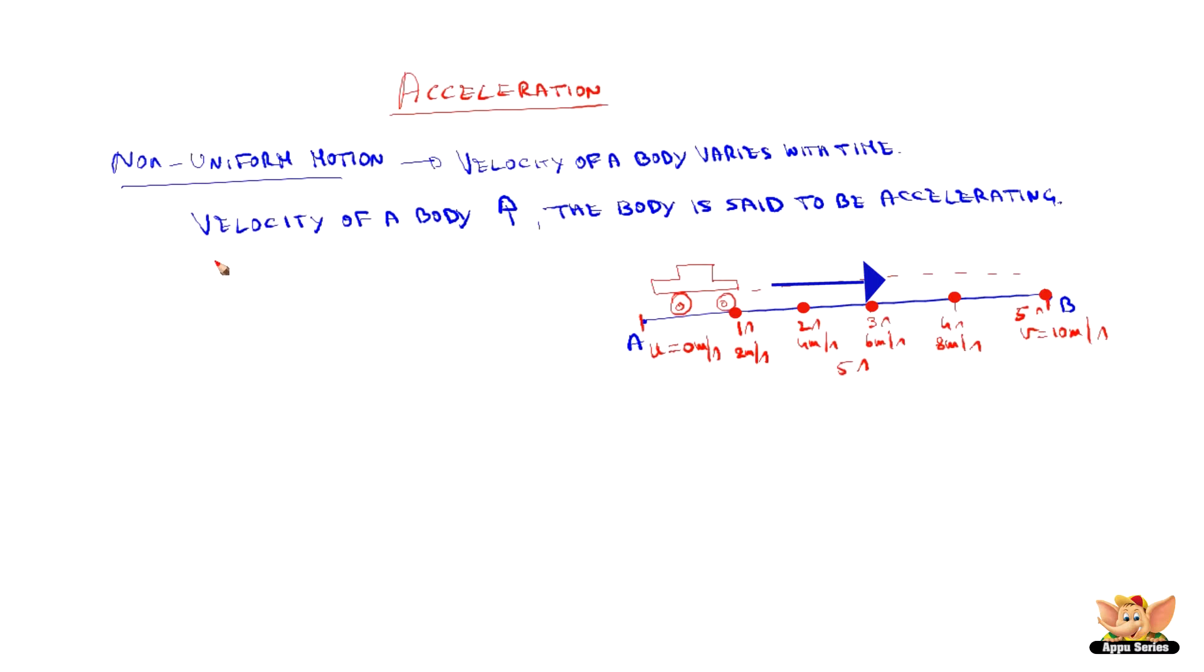What does this diagram say? It says the change in velocity in each second is 2 meter per second. And the rate of change in velocity, which is always taken per unit time, in this case, is 2 meter per second per second, which is nothing but 2 meter per second square. This is what we call as acceleration.